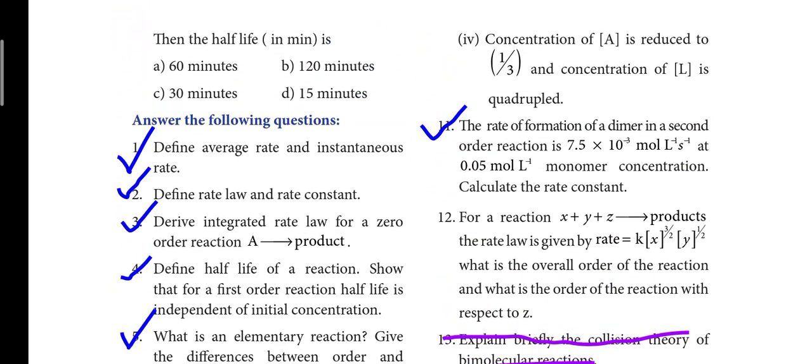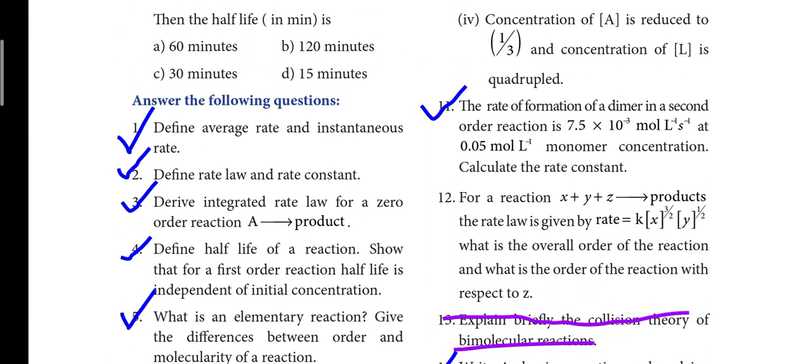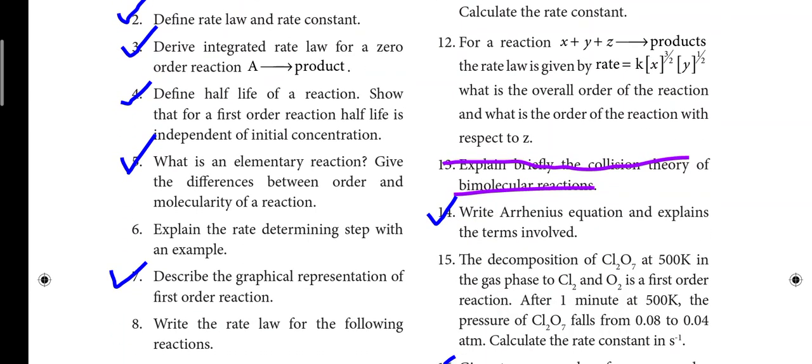Next, problems related to rate of formation for first order reaction — calculate the rate constant. Problems related to rate constant and half life period — maximum two questions. Seventh problem, fourth question: write Arrhenius equation and explain the terms involved. It is a 2 mark or 3 mark question.